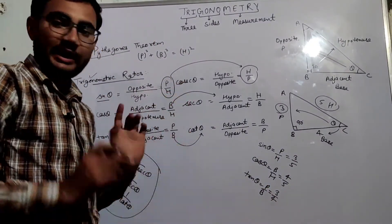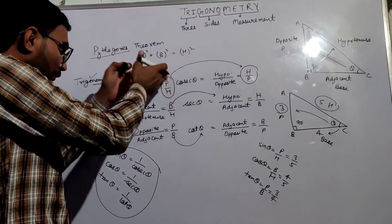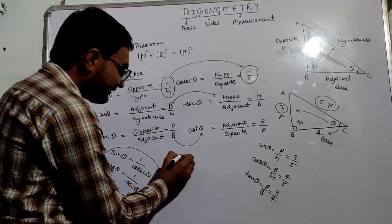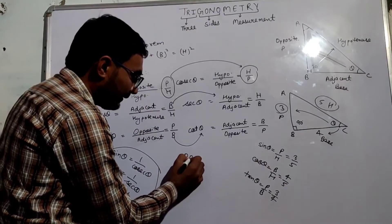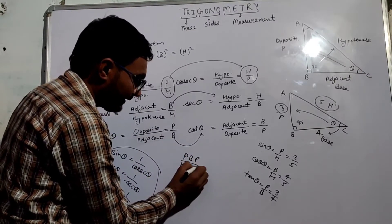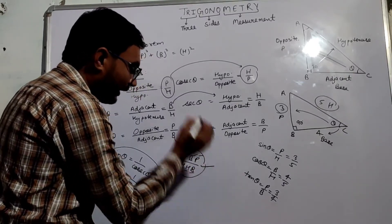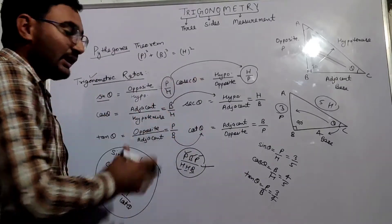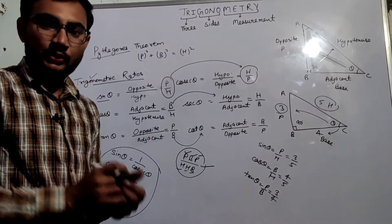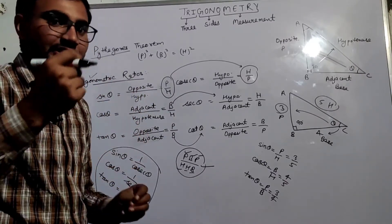Similarly we can calculate cosecant theta, secant theta, and cot theta. Now the question is: how to remember the values of these trigonometric ratios? There is a simple trick — P B P upon H: 'Pandit Badri Prasad Har Har Bole.' You can use this trick to remember the ratios of the six trigonometric ratios.